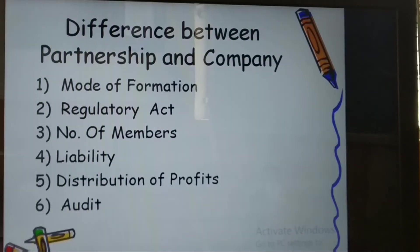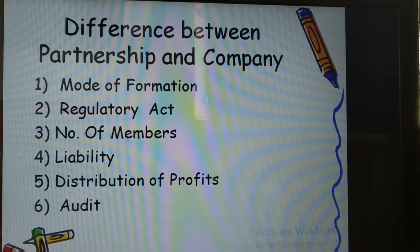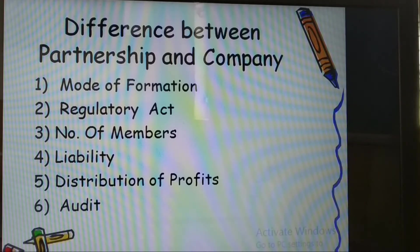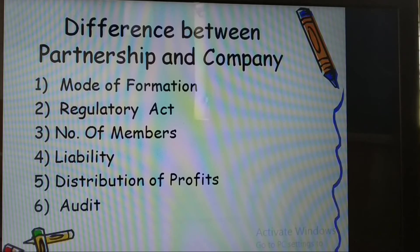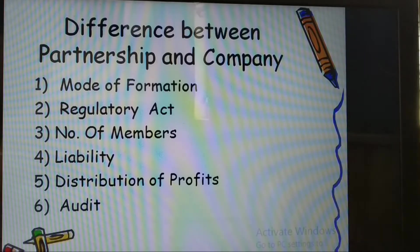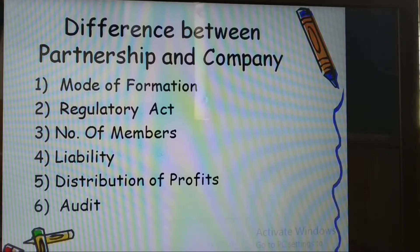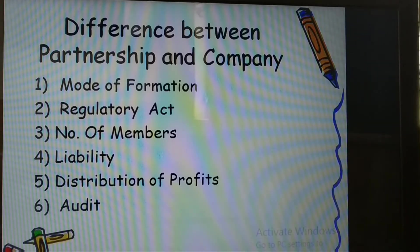When we talk about number of members, this means the minimum and maximum number required to start a partnership or company. In partnership, the minimum number of partners is two and the maximum is 50, as per Companies Act 2013 and Rule 10 of Companies Rules — the maximum of 50 is not mentioned in the Partnership Act itself but is referenced there.